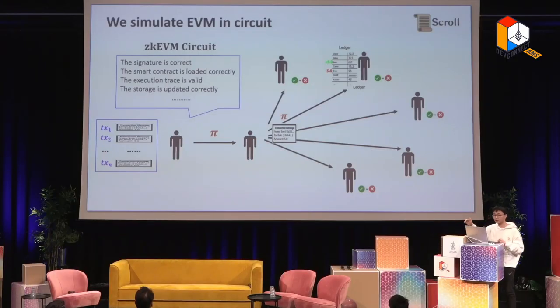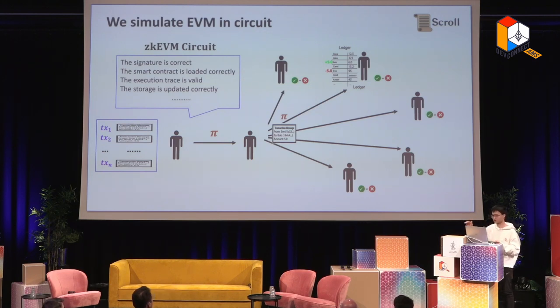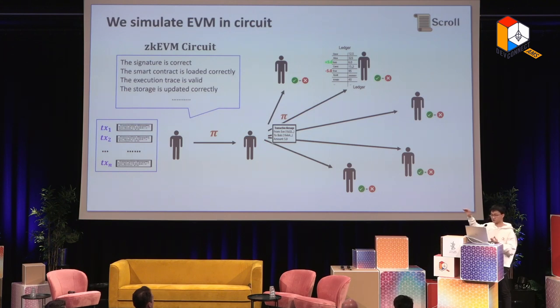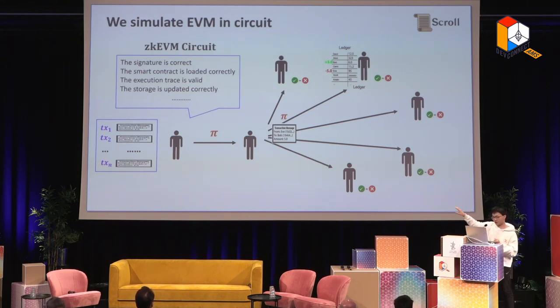You need something more universal with very good developer experience. The basic idea of ZK EVM is that instead of encoding the smart contract logic using an arithmetic circuit, you encode what the virtual machine is doing in the ZK EVM circuit. It's a more general circuit, and your smart contract will just be the input of this ZK EVM circuit. Basically, what you need to prove is that the signature is correct, your smart contract is loaded correctly, your execution trace is valid, and your storage is updated correctly. This is how ZK EVM fits into the ZK rollup diagram.